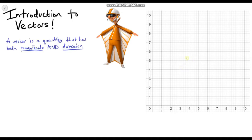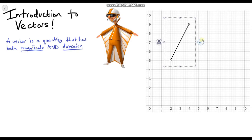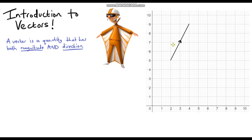We can represent vectors using arrows, so let's draw a vector on our graph. Our vector starts in this position and goes all the way up to here. A vector has a direction, so I can draw an arrow on here to show it. We can see it has a magnitude — the magnitude just means the length of the line — and it also has a direction. So I have drawn a vector.